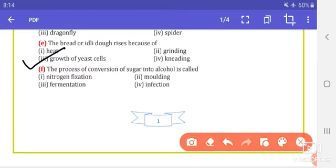The process of conversion of sugar into alcohol: options are nitrogen fixation, molding, fermentation, or infection. So the right answer is fermentation.